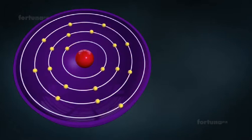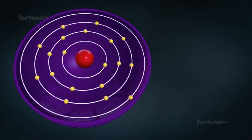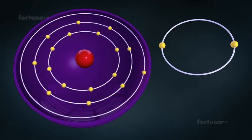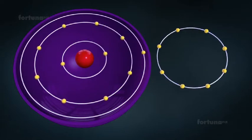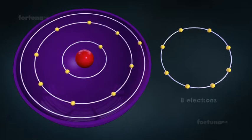Bohr also postulated that the number of electrons found in particular energy levels will differ. Energy level 1 can hold up to 2 electrons, while energy level 2 can hold as many as 8 electrons.